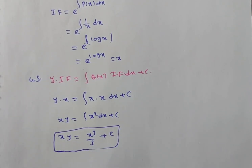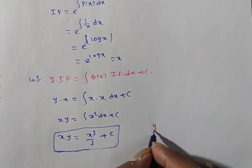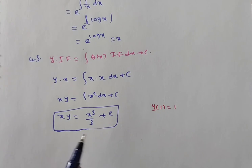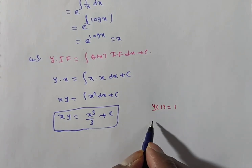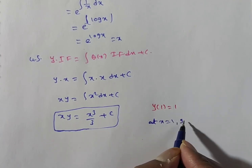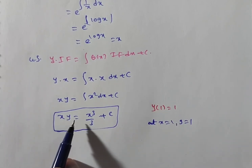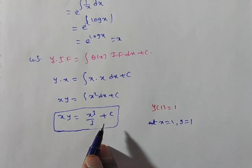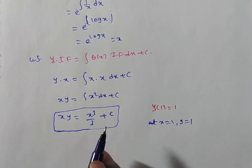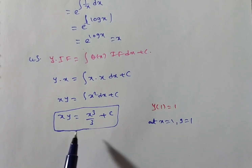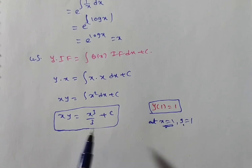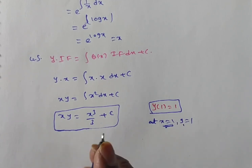This is the general solution of the given first-order first-degree linear differential equation, containing one arbitrary constant C. The initial condition given is y(1) = 1. We use this condition to eliminate the arbitrary constant — meaning when x = 1, y = 1. Substituting x = 1 and y = 1 into the general solution gives us the value of C.